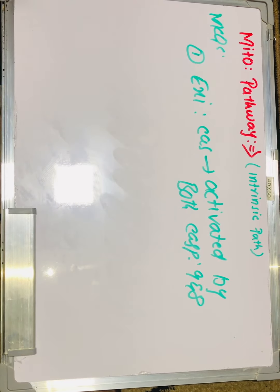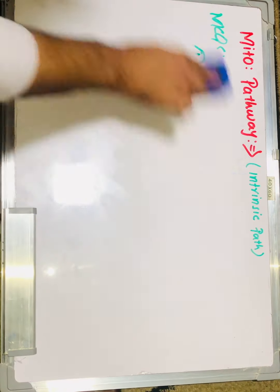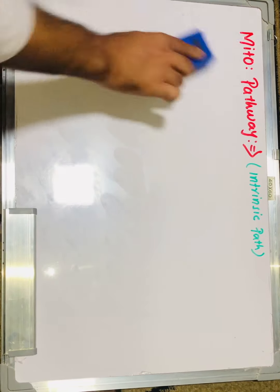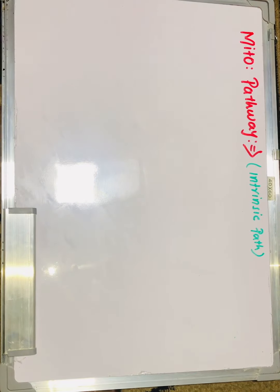So this was all about the mitochondrial pathway, in which we discussed the mechanism and the role of mitochondria in the process of apoptosis. Thank you.